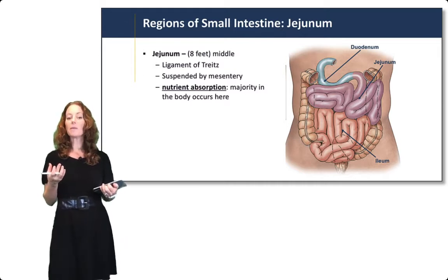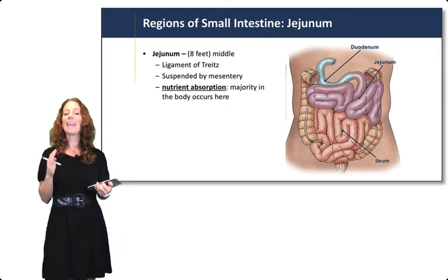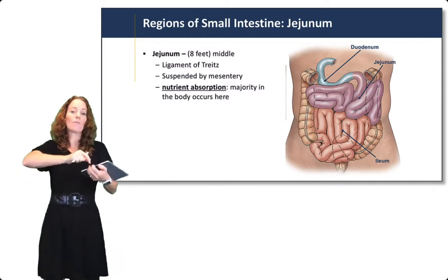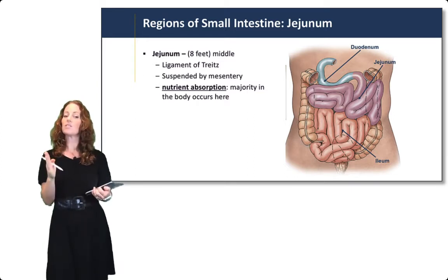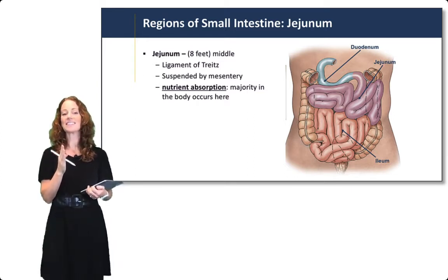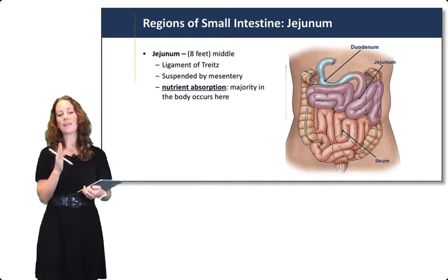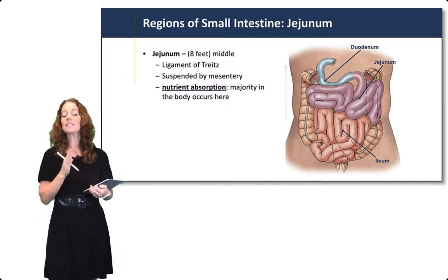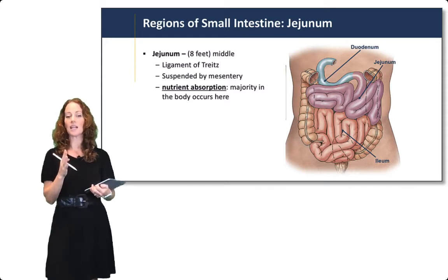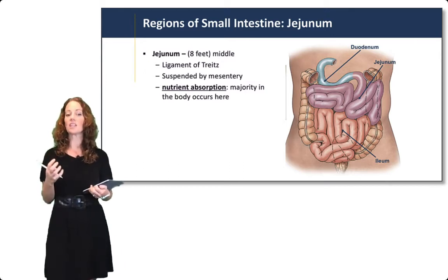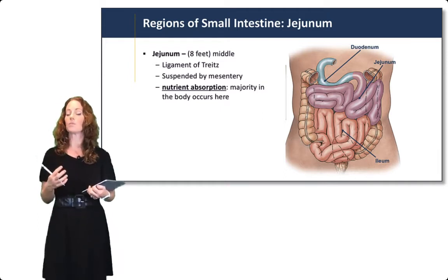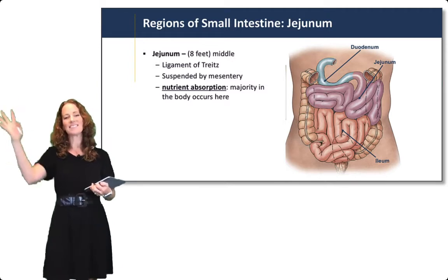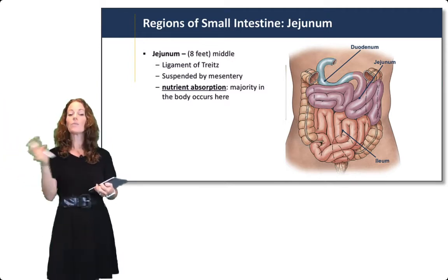The jejunum is about eight feet long if we were to remove the mesentery and stretch it out. The boundary of the duodenum and jejunum is a ligament called the ligament of Treitz. The jejunum is suspended by the mesentery — these double layers of peritoneum — and the majority of digestion and absorption happens here in the jejunum, with a lot of nutrient absorption through this eight feet of space.